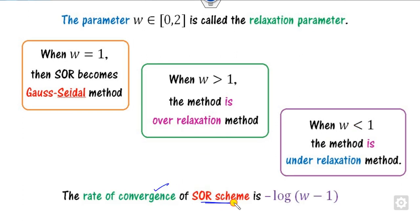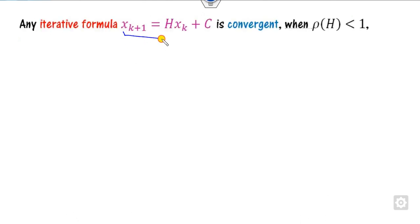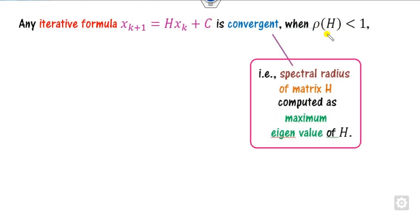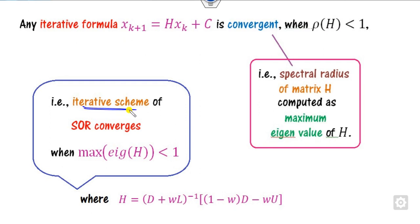The rate of convergence of the SOR method is determined by minus log of (W minus 1). Any iterative scheme of the form X = H·X + C is convergent whenever rho(H) is less than 1, where rho is the spectral radius of matrix H — that is, the maximum absolute eigenvalue of H. So the SOR method converges when the maximum eigenvalue of H is less than 1.